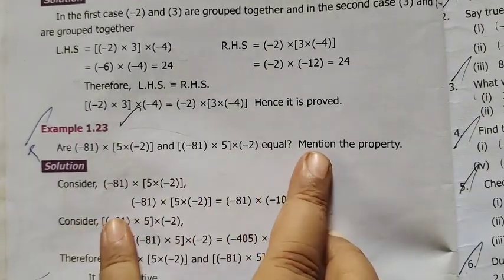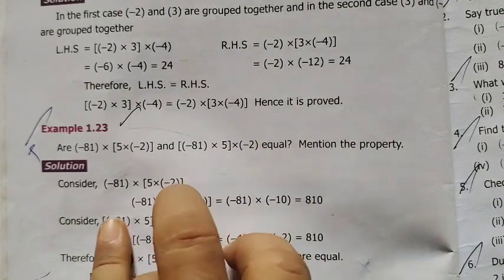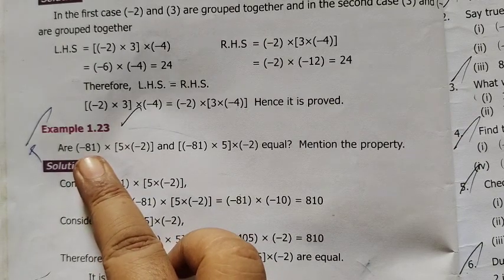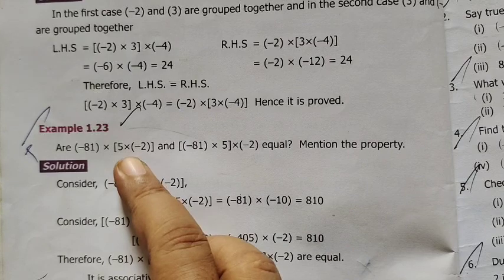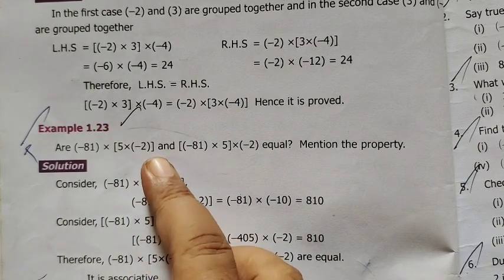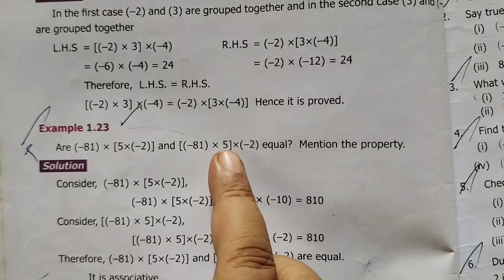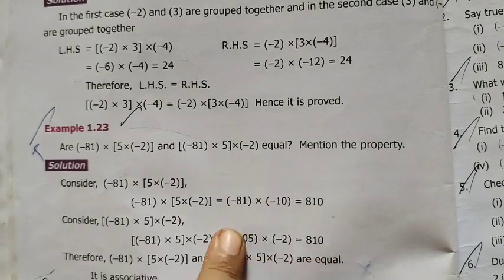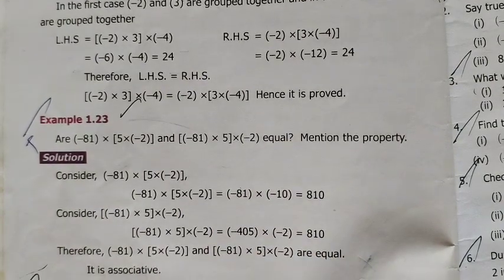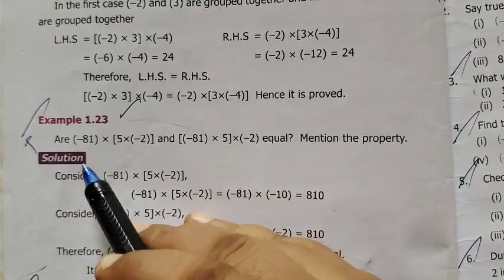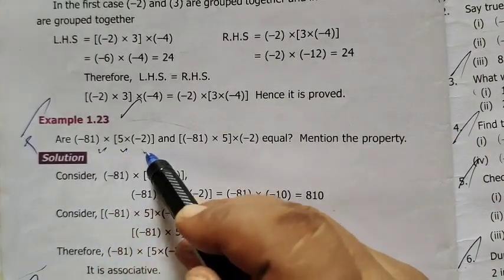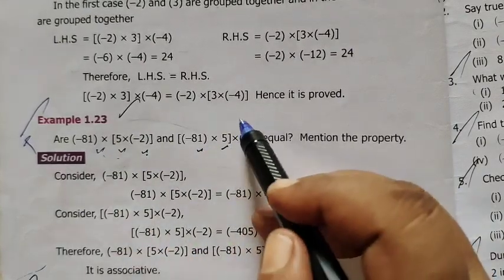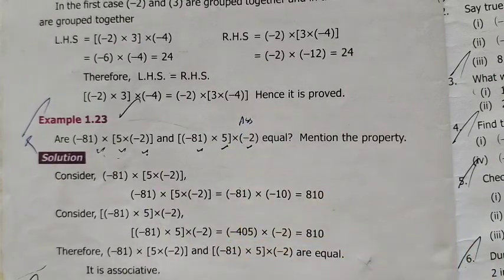What property is this? Distributive property. Or minus 81 into 5 into minus 2, and minus 81 into 5 into minus 2 equal. That's how the property is. There are three numbers. So the property is associative property.